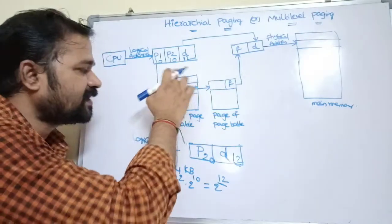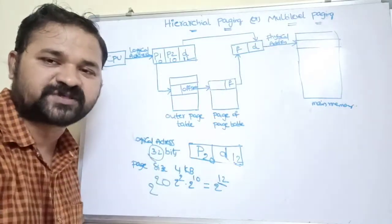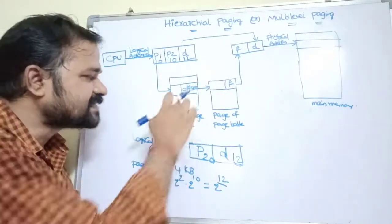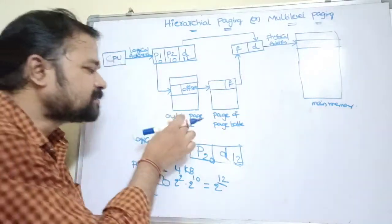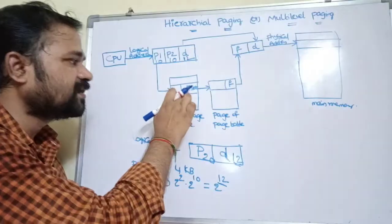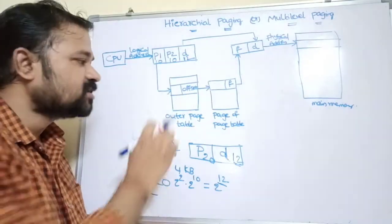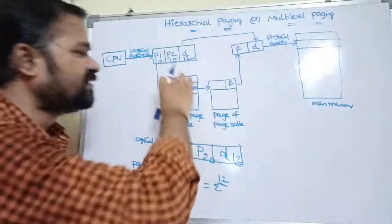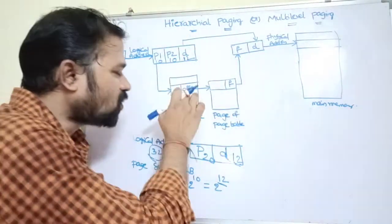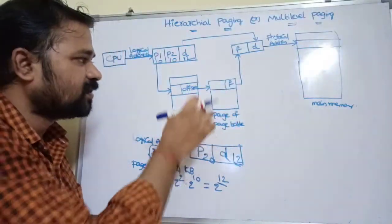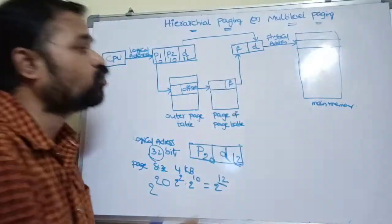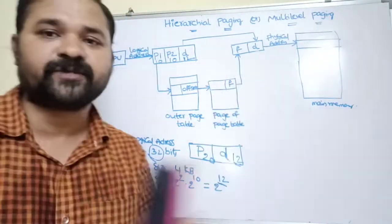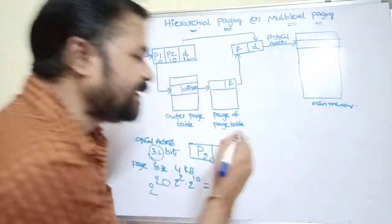p1 is given as an index to the outermost page table, just like the first for-loop in nested loops. The outermost page table produces an offset, which is given as an index to the inner page table — a page of the outermost page table. This inner page table produces the frame number. Combining the frame number with the offset d gives the exact physical address in main memory.